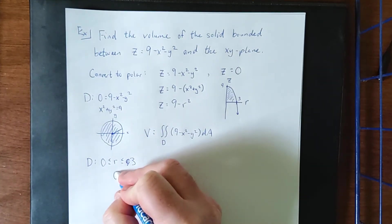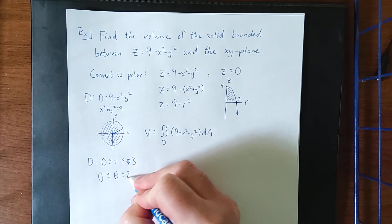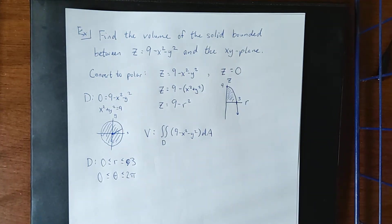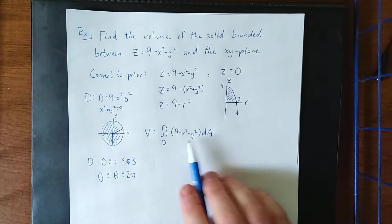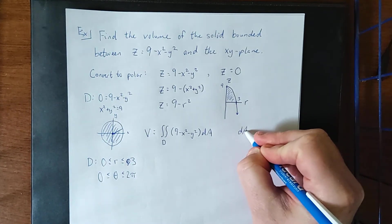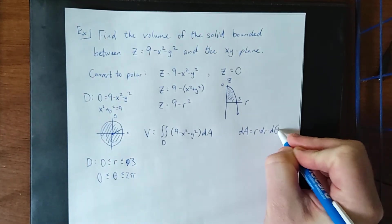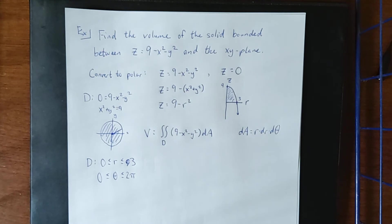And then for theta, we're going to need simply one full sweep around the xy plane. Recommended for that would be 0 to 2 pi. Now as far as the integrand is concerned, we've already performed that up here. And the Jacobian of the transformation into polar coordinates, once again, is going to be r. So dA will be r dr d theta.